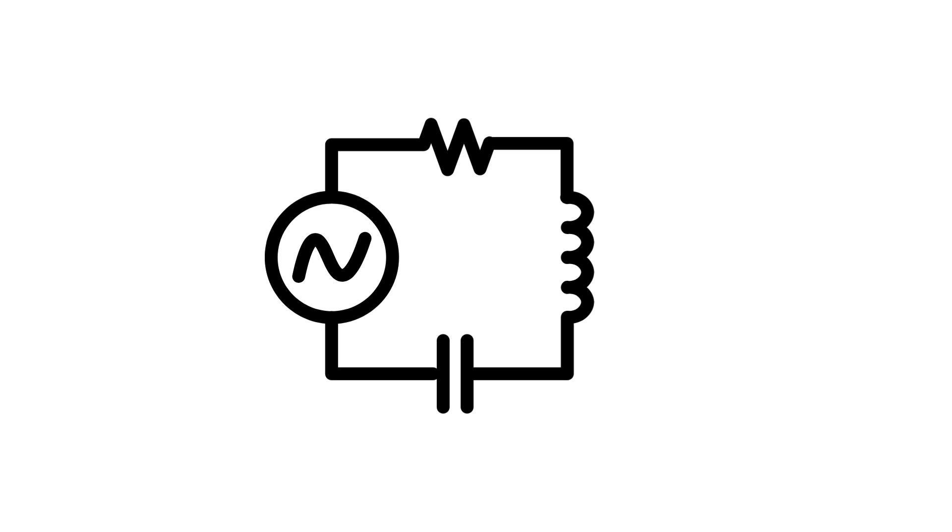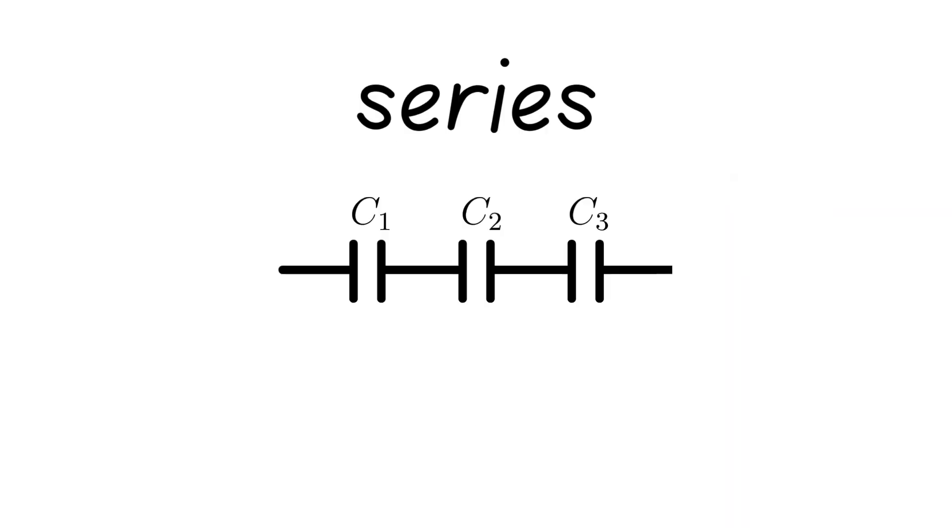The symbol for a capacitor in electric circuits is this. When several capacitors are connected in series, the overall capacitance is related to all the individual capacitances by this equation. When the capacitors are connected in parallel, the effective capacitance is the sum of all the individual capacitances in the network.